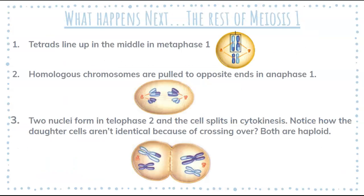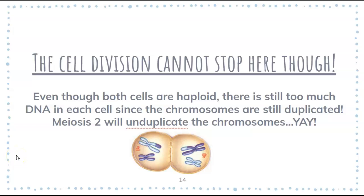So then what happens next? The tetrads are going to line up in the middle and get pulled to opposite ends. And then we're going to have two nuclei. Notice — are the nuclei the same? No. This is very different from mitosis, where we end up with two identical nuclei. In meiosis we do not. They literally have different color combinations. And instead of having four chromosomes, they only have two, so both are now haploid. But we're not done, because our chromosomes are still duplicated — we don't need two copies of a thing.